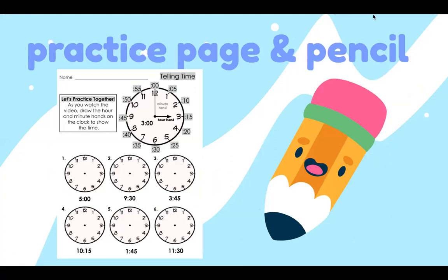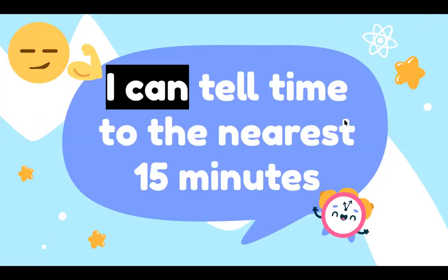So first you're gonna need the practice page that should have been passed out to you. If you're at home you can print this off. It's two-sided. This is what the front side looks like. And a pencil. Today you're gonna be able to say, I can tell time to the nearest 15 minutes.